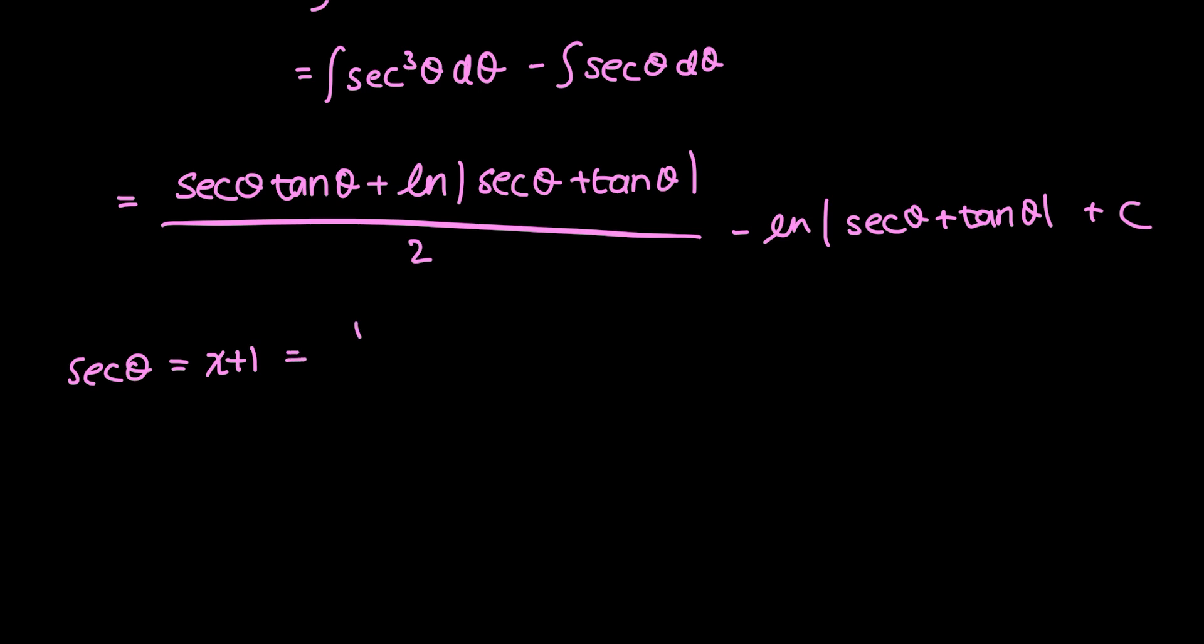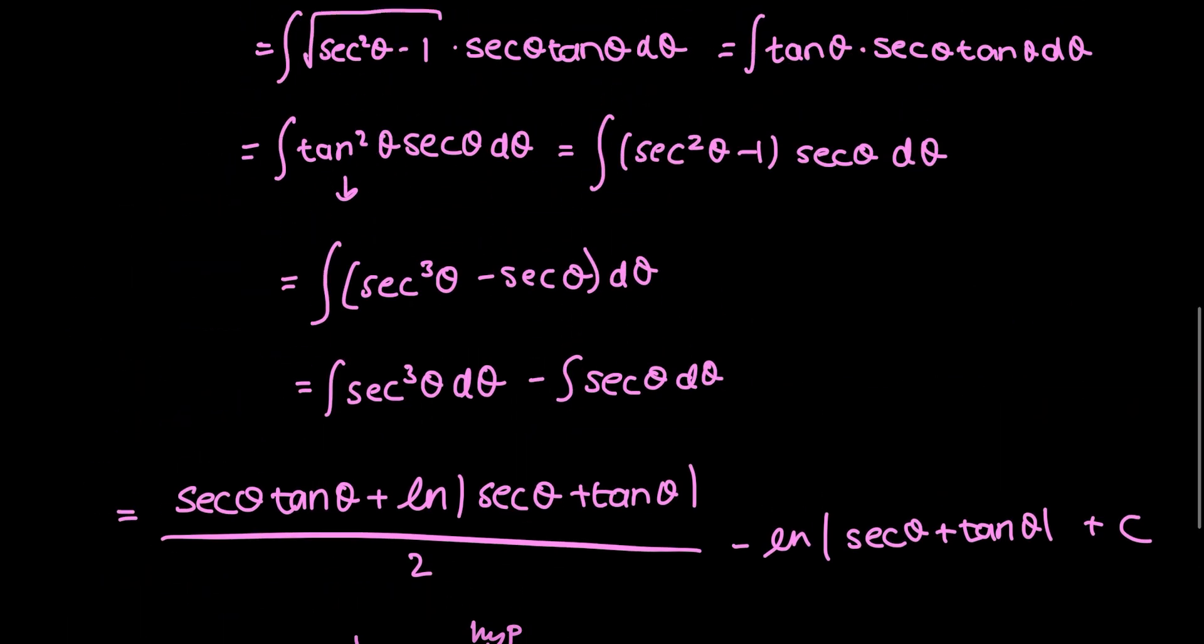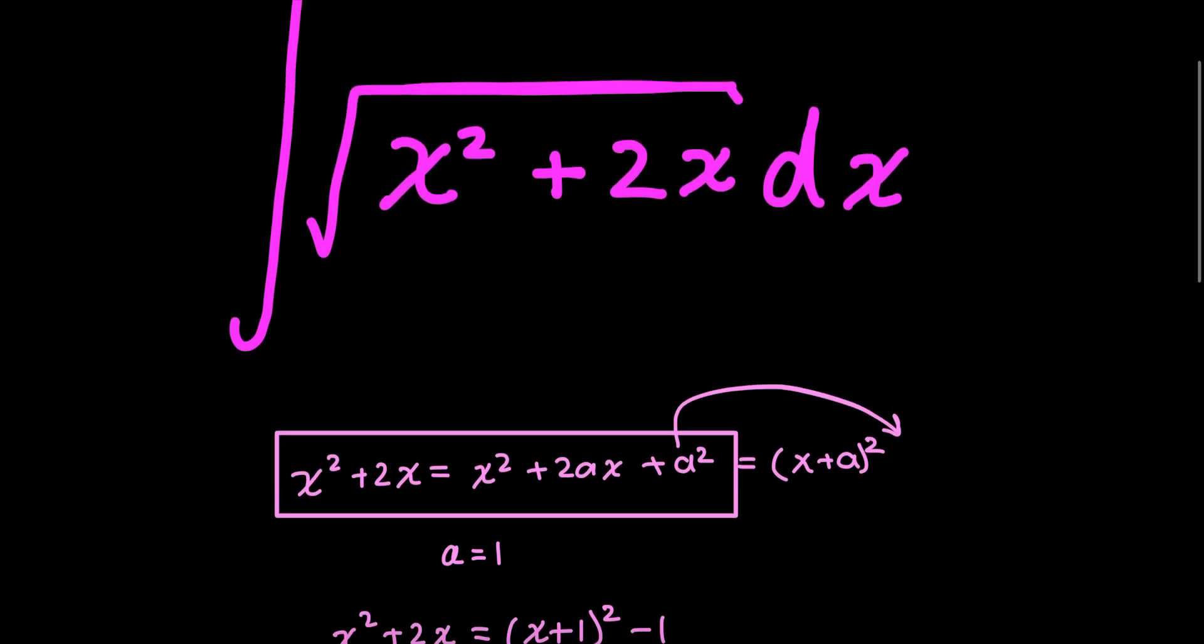And secant theta is also just equal to 1 over cosine theta, and we know that cosine is the adjacent over the hypotenuse, so secant is the hypotenuse over the adjacent, and so I can create a triangle out of this. If I define this angle here as theta, then my hypotenuse is x plus 1, and my adjacent side is just 1, and therefore my missing side is just x plus 1 squared minus 1, or x squared plus 2x. And I got this from just what I had in my integral before I completed the square.